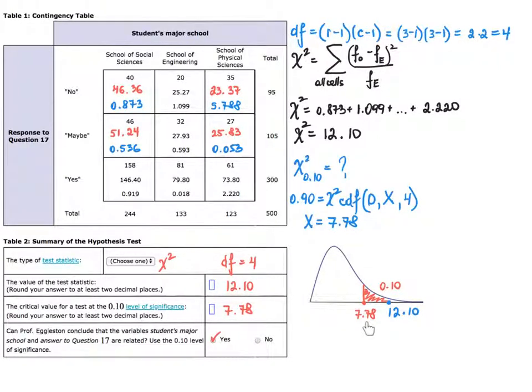So, this must be the boundary that separates this critical region from the acceptance region. Because the test statistic happens to be quite big compared to my critical value 7.78, I have evidence to reject the null hypothesis. Which means independence is not there. The variables are dependent. Students' answers have something to do with their major.